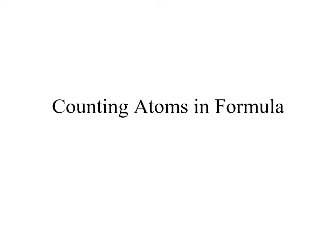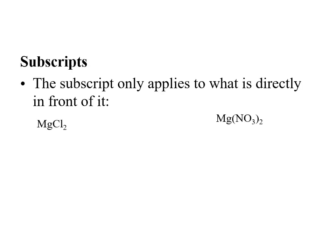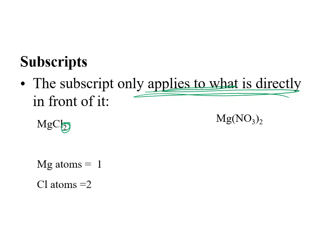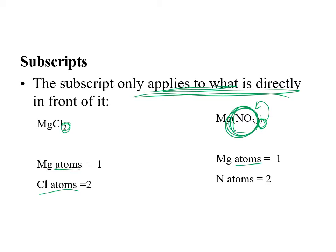When counting atoms in a formula, look at how subscripts, coefficients, and brackets all come together. For example, in MgCl2, the 2 applies only to the chloride — so there is one magnesium and two chlorides. In magnesium nitrate Mg(NO3)2, the 2 outside the bracket applies to everything inside: one magnesium, two nitrate ions, meaning two nitrogen atoms and two groups of three oxygens — six oxygens total.